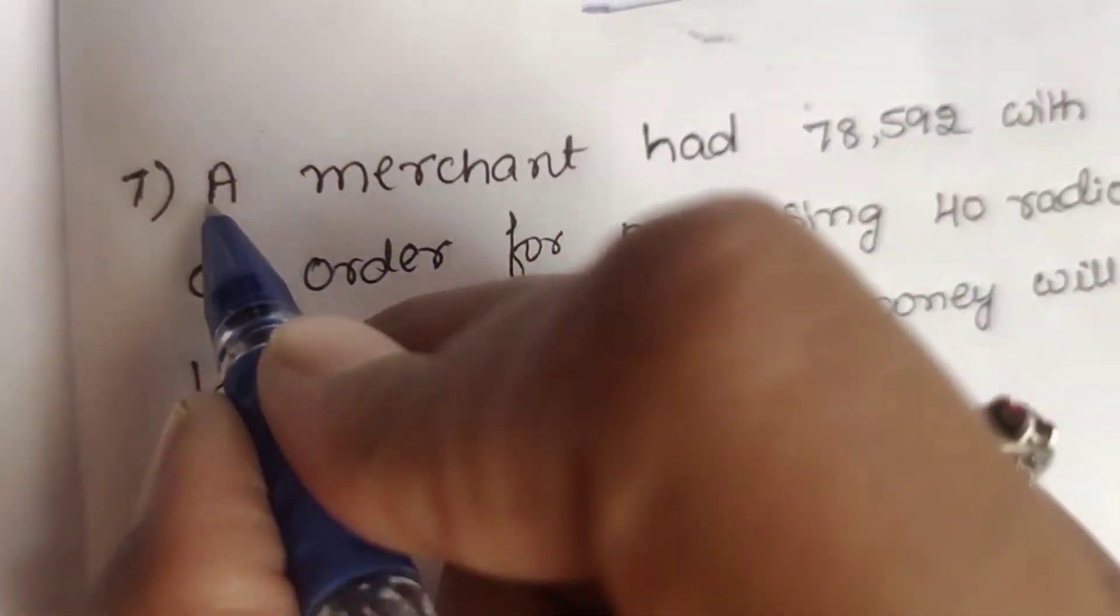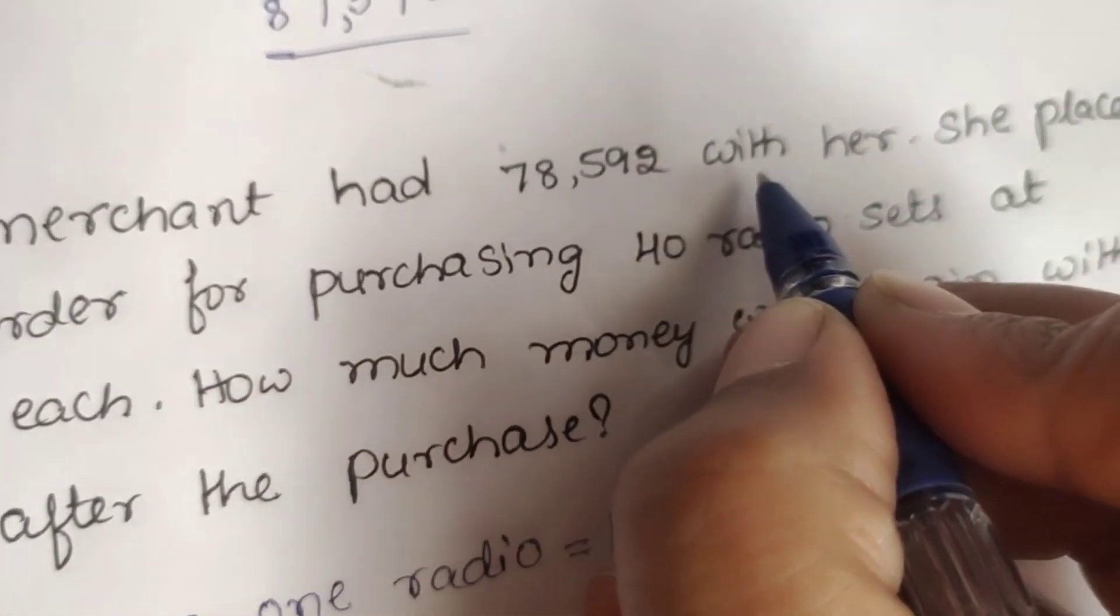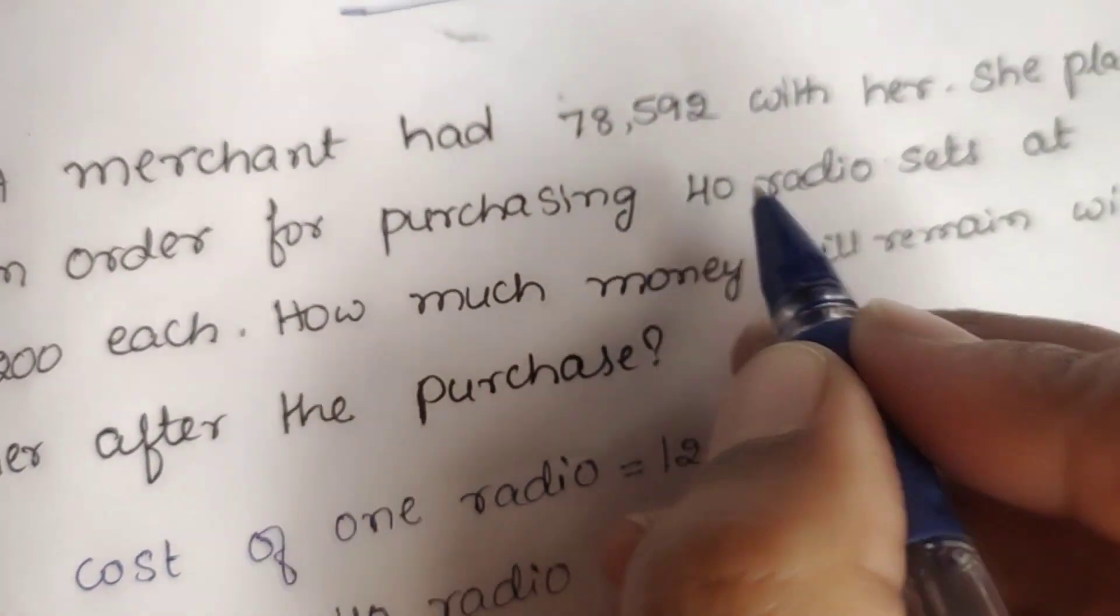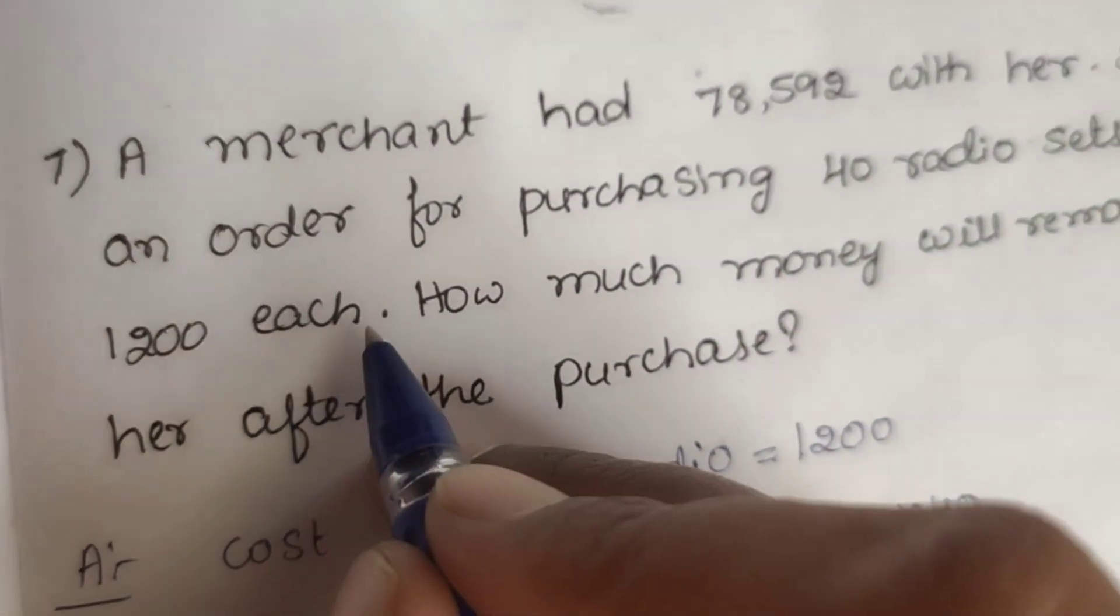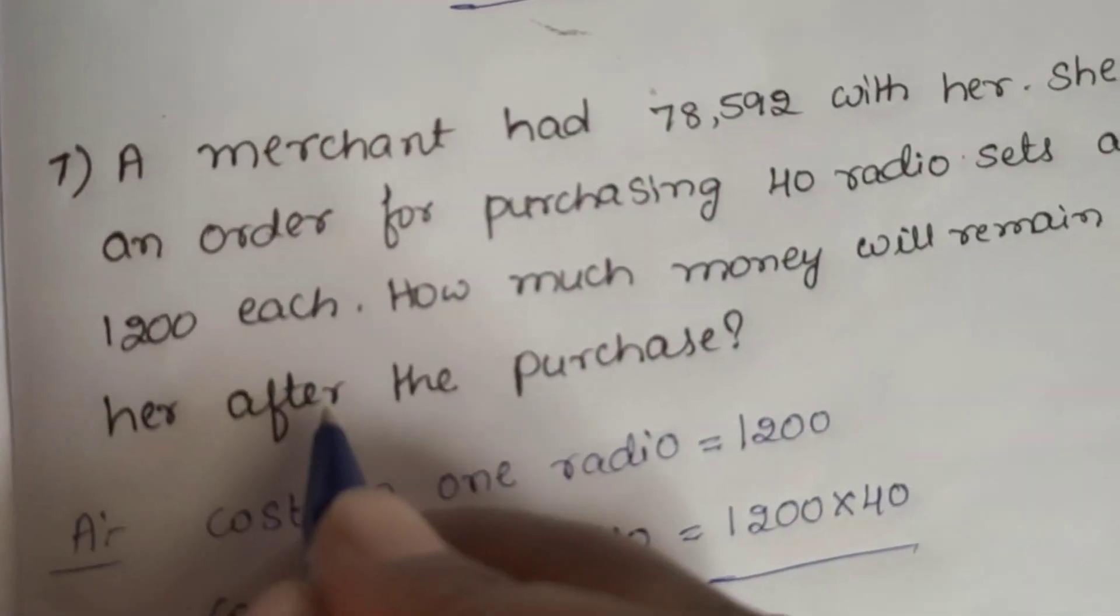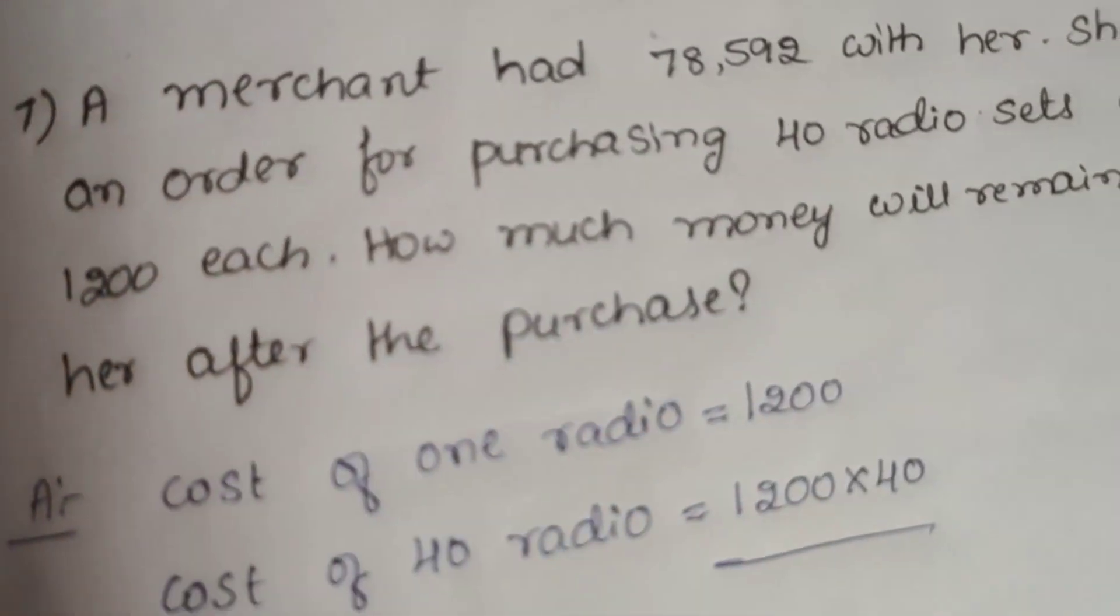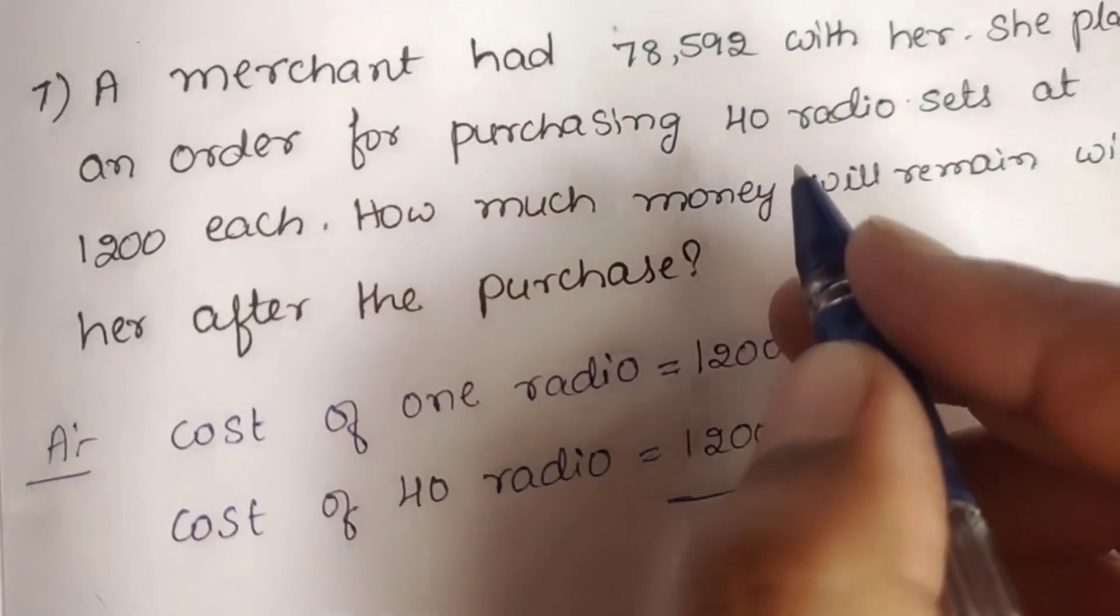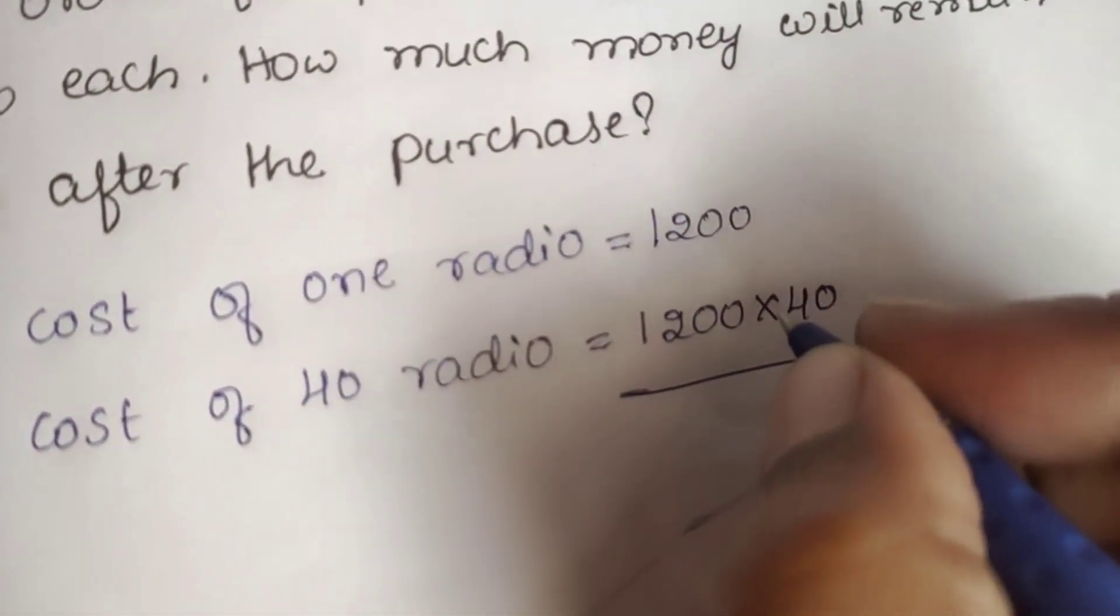Seventh question: A merchant had 78,592 with her. She placed an order for purchasing 40 radio sets at 1,200 each. How much money will remain with her after the purchase? So, cost of 1 radio is equal to 1,200. Cost of 40 radios is equal to 1,200 into 40.